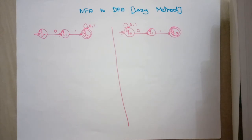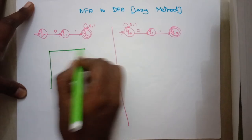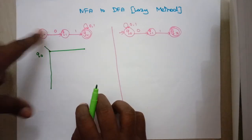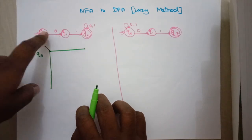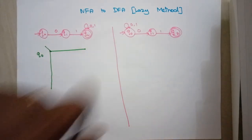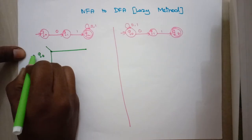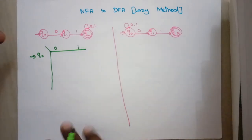You can use this method for verification — the answer will be correct. In the lazy method, we start the transition table with the starting state. One important thing: whether it's an NFA or DFA, there is always a single starting state. You can have any number of final states. Here is an NFA that accepts strings over 0 and 1, where the input starts with '01' followed by zero or more 0s or 1s. q0 is the starting state.